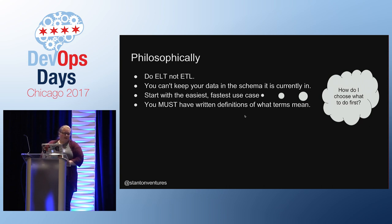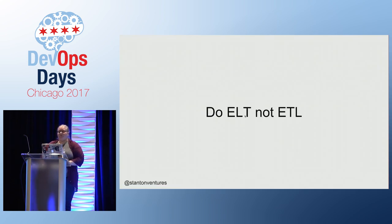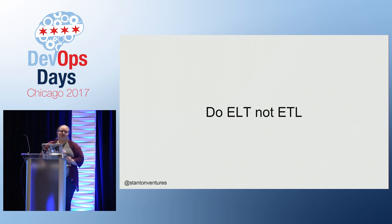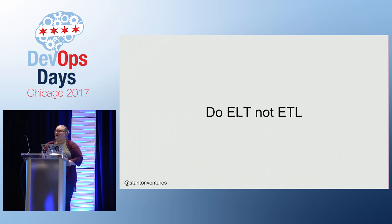When I say ELT, I mean extract, transform, load. You want to extract your data, load it, and then transform it once it's in a data warehouse. You don't want to transform it on the way there because you're potentially choosing, changing, or losing data. My favorite method for transforms is to do it in SQL itself — that allows for version controlling of your scripts, prevents a lot of I/O, and utilizes a language optimized for aggregates and manipulations. To put it bluntly, I can do more in 1,000 lines of SQL than in 5,000 lines of Python. That said, software developers are generally not good SQL writers at the level I'm talking about, so please involve someone who knows what they're doing. SQL is not for the untrained.